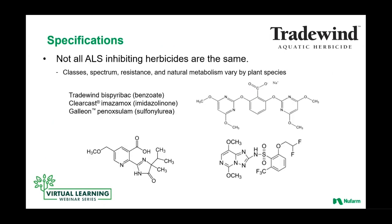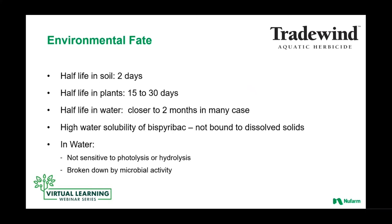What's interesting is that even though Clear Cast, Galleon, and Tradewind are all ALS chemistries, they're very different. You can see structurally they're quite different, and when you break them down, the weed spectrum is different, how plants respond to each is very different, and how they're metabolized by plants and in water is quite unique. There are some pretty large differences, and we're going to show you some pictures on those differences.